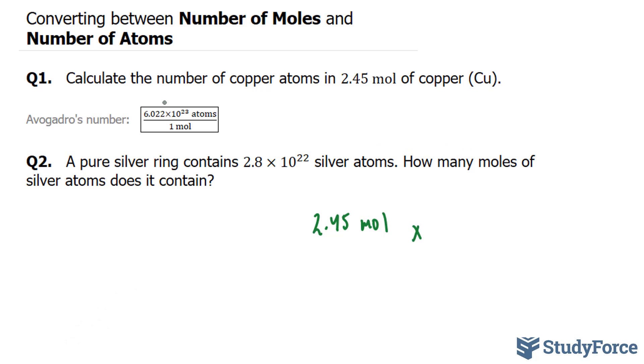I'm going to keep it the way it is because if I keep it the way it is, look what happens. So we have 2.45 times 6.022 times 10 to the power of 23 atoms over 1 mole. The mole units cancel out, and we're left with atoms.